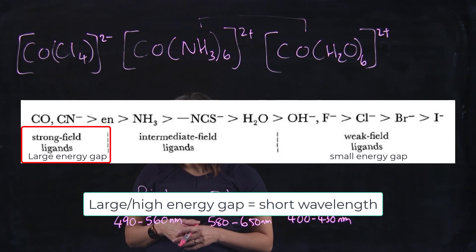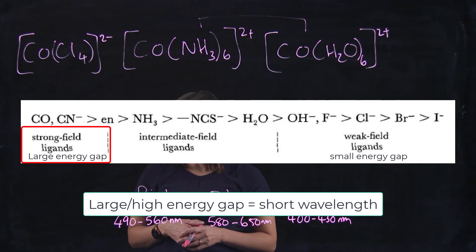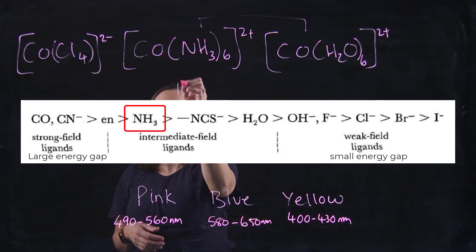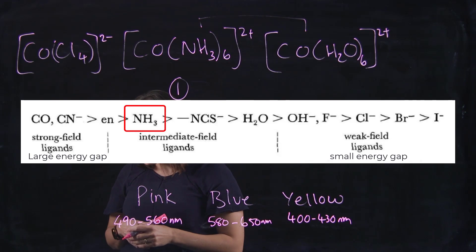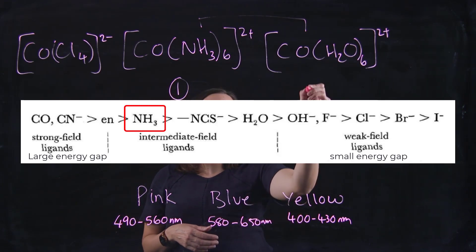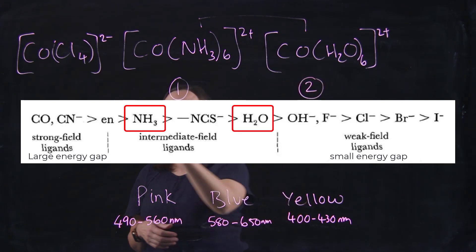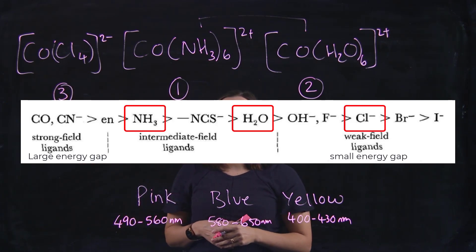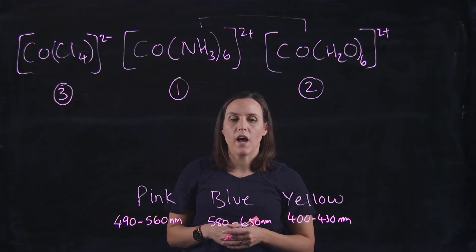The higher the energy gap, the shorter the wavelength absorbed. Looking at this, we have NH₃ that comes first with the highest energy gap, then water, and lastly chloride. So NH₃ will have the shortest wavelength.